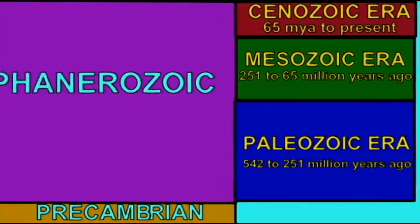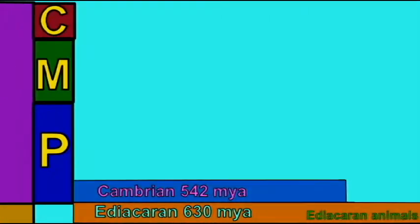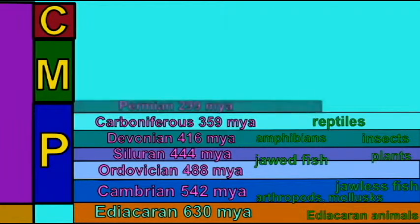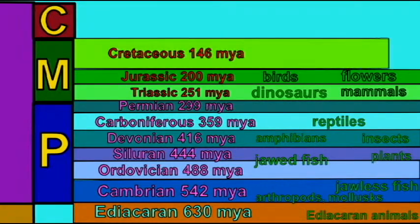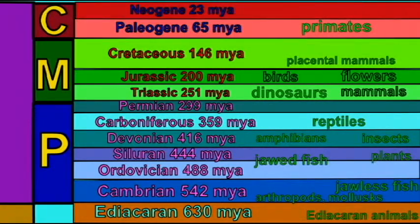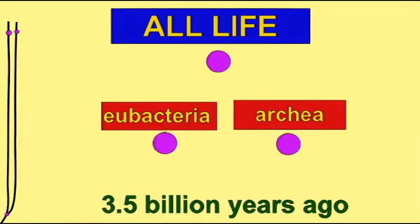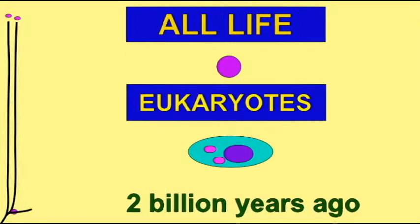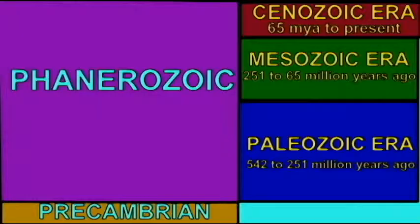One of the most obvious conclusions from studying the fossil record is that all life has not always coexisted. There is an order in which types of organisms appear in the fossil record. Now while we'll study that throughout this course, just in general, prokaryotic cells or bacterial cells came first. The larger eukaryotic cells are known after the prokaryotic cells.